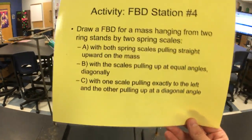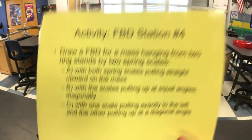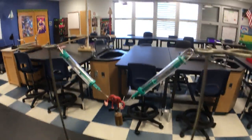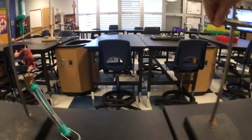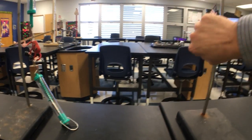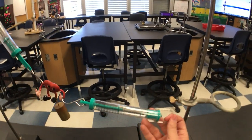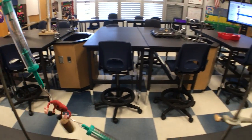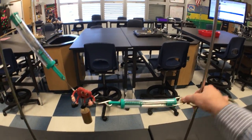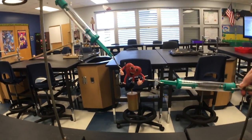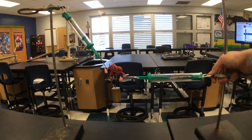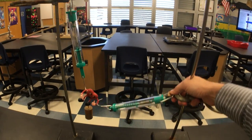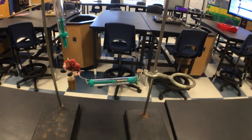And C: with one scale pulling exactly to the left and the other scale pulling up at a diagonal angle. This is going to require a little bit of adjustment. We're going to untighten and drop it down to equal height with Hartman — that's approximately good enough. Pull this on over and put it on here, raising it up just a little bit. So it's pulling exactly to the left and the other one's pulling up diagonally. Take a look at those readings on the four scales and you might see some cool physics there. Okay, that's station number four.